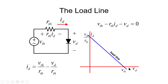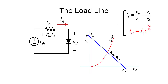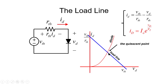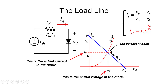Whatever I_d and V_d are, they must lie on the load line to satisfy the linear circuit. But the diode also has requirements — it specifies that I_d and V_d must lie on the exponential. To satisfy both equations simultaneously, we find their intersection graphically. At that point, called the quiescent point, we find the actual diode voltage and current — the quiescent voltage V_DQ and quiescent current I_Q.